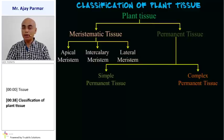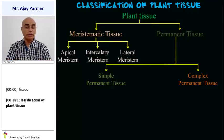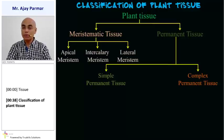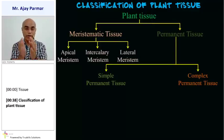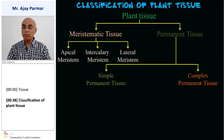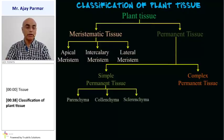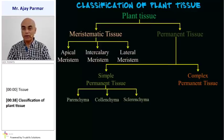Permanent tissues are further classified into two groups: simple permanent tissue and complex permanent tissue. Simple permanent tissues are composed of similar kinds of cells, whereas complex permanent tissues are formed when many different types of cells unite together. Simple permanent tissue is further classified into three categories: parenchyma, colenchyma, and sclerenchyma.